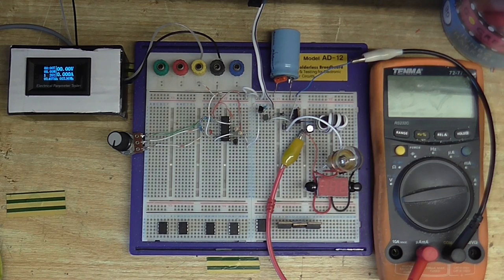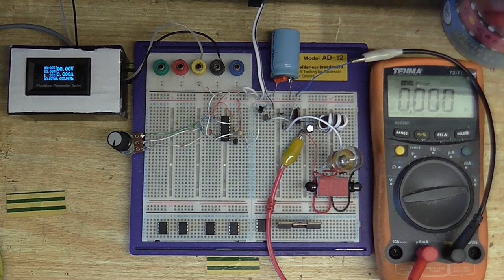So anyway, I know it's been a long time, but I'm going to continue on with the homemade buck converter circuit. So it's pretty much exactly as I left it in the previous video. In this video, I'm going to add current and voltage regulation.